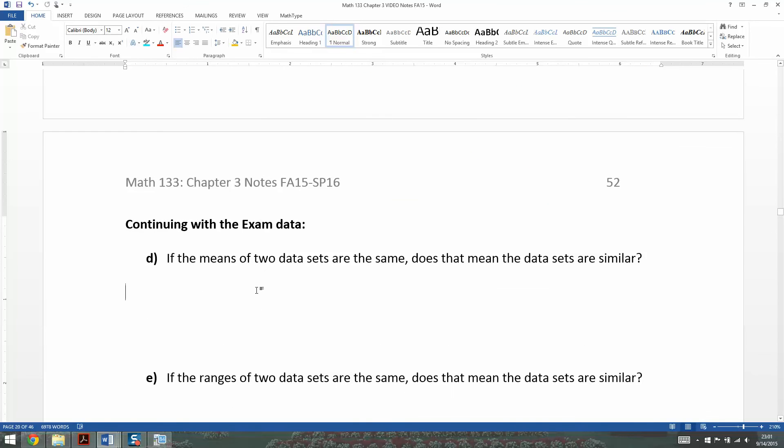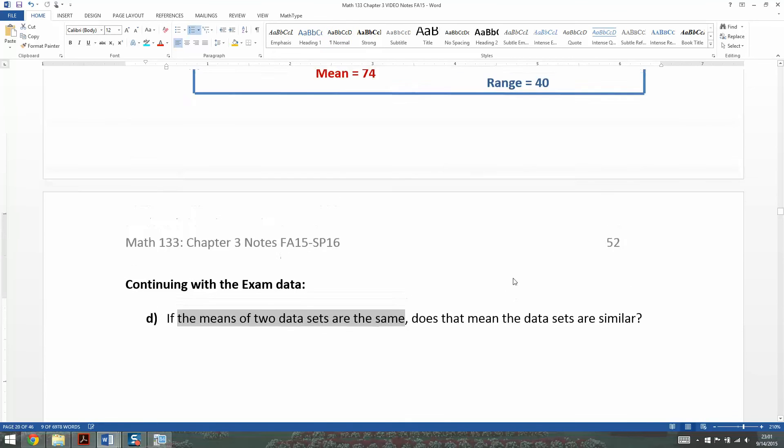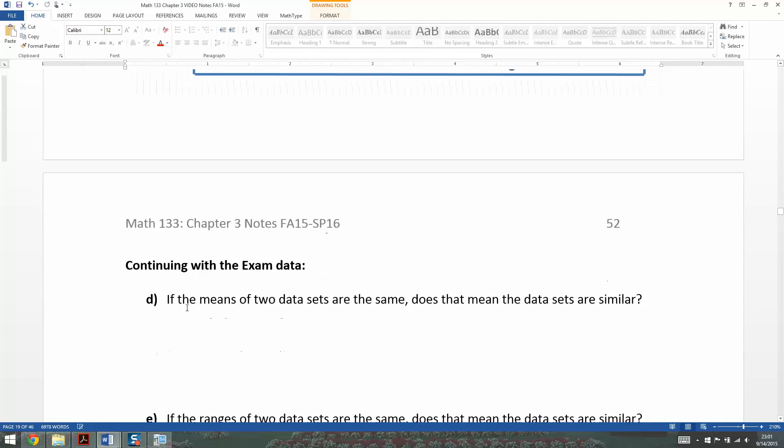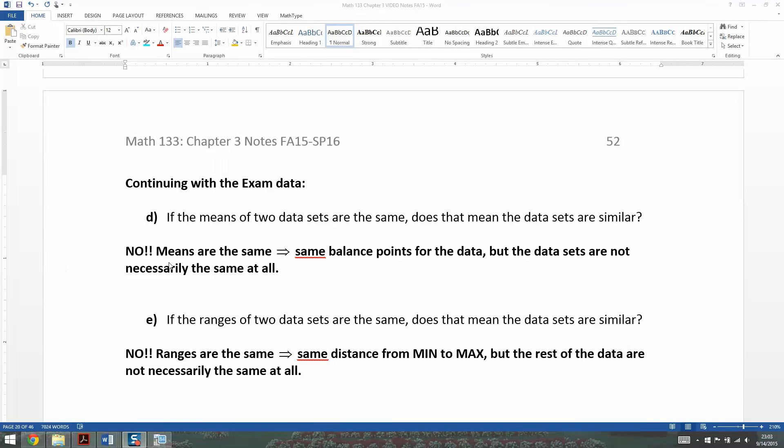What was I getting at when I did this? I obviously created these for a reason. The first thing I want us to see is if the means of two data sets are the same, does that mean that the data sets are similar? If you look at the algebra exam and the stats exam, they have the same mean of 74. But look at the dots. They're not the same at all. We know that they have the same balance point of 74, but that's all we know. The means are the same means that the data sets have the same balance point.